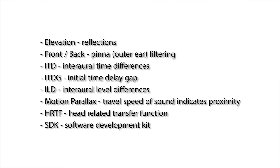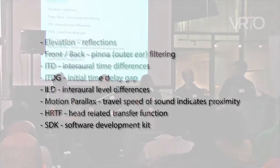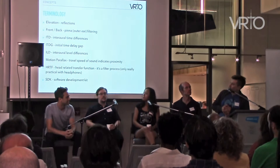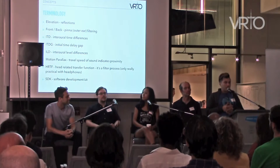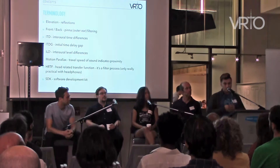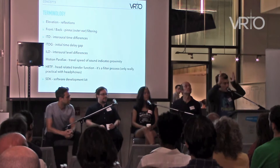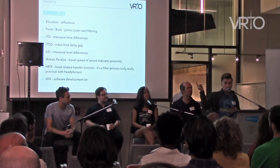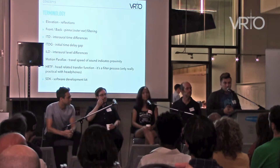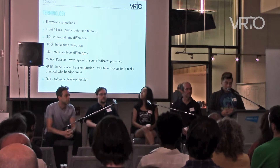ILD — inter-aural level differences — is simply whether the sound is louder in your right ear or in your left ear. Motion parallax: the travel speed of sound indicates proximity. When something is closer to you, it seemingly moves across greater distance at a higher rate, and the further away it is, it seems to move slower. So if something travels across your position very quickly, it must either be very close to you or moving at an incredibly fast speed at a farther distance. Motion parallax is another way we can identify the proximity of an audio event.